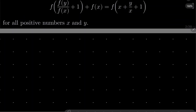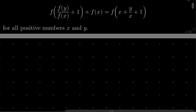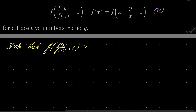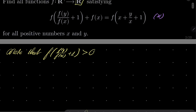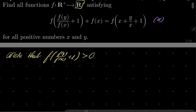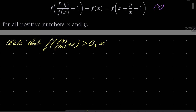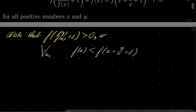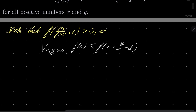All right, let's take a look. Let's call our equation asterisk. Note that f(f(y) / (f(x) + 1)) is greater than zero — why is that? Because our function maps to positive real numbers. So f(x) is definitely less than f(x + y/(x+1)) for every positive real numbers x and y.